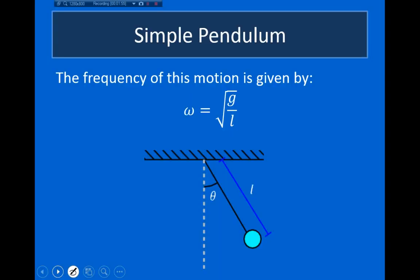For something like the pendulum, the angular frequency is given by this formula: it's the square root of g, the acceleration due to gravity, divided by the length of the string. Hopefully this formula makes some sense. If you've ever seen a pendulum before, you know that the longer the length of the string, the longer it takes for the mass to swing back and forth.